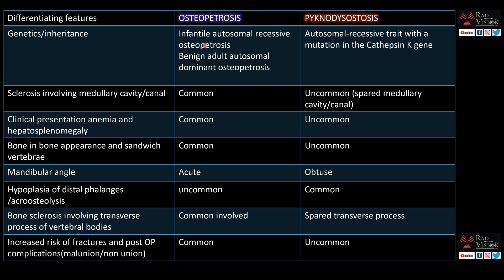Comparing osteopetrosis and pycnodysostosis: Osteopetrosis has an infantile autosomal recessive form and an adult autosomal dominant form. Pycnodysostosis is autosomal recessive with a mutation in the cathepsin K gene. Sclerosis involving the medullary canal is common in osteopetrosis but uncommon in pycnodysostosis.